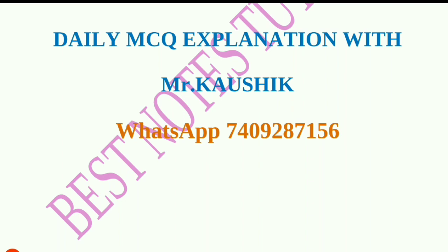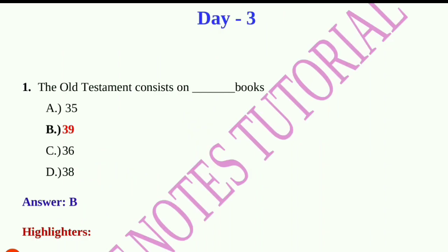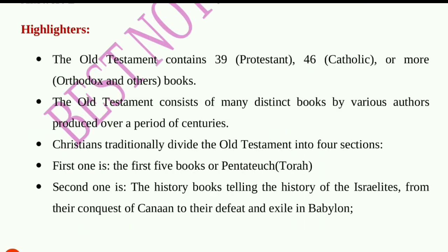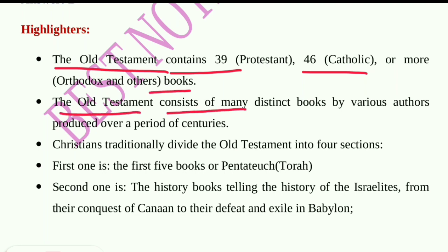Question number one: The Old Testament consists of how many books? Options are: A) 35, B) 39, C) 36, D) 38. The answer is option B — 39. The Old Testament contains 39 Protestant books, 46 Catholic books, or more in Orthodox traditions.